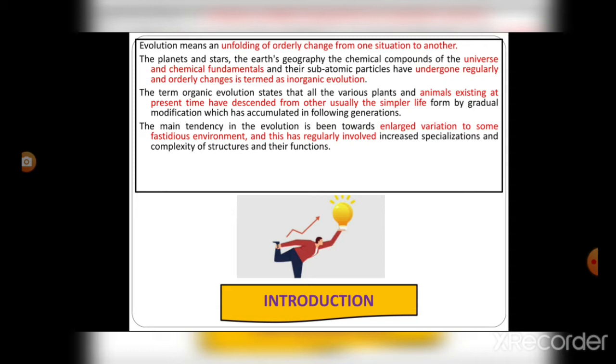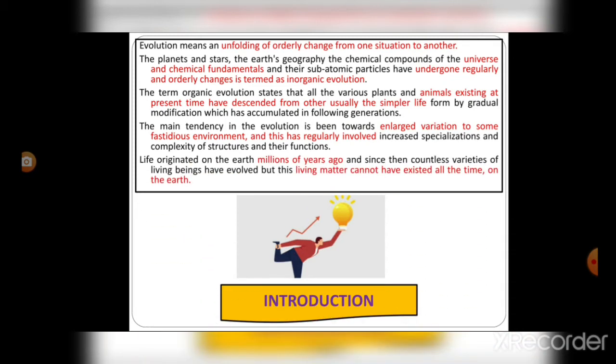Life originated on Earth millions of years ago and since then, countless varieties of living beings have evolved. But this living matter cannot have existed all the time on Earth.